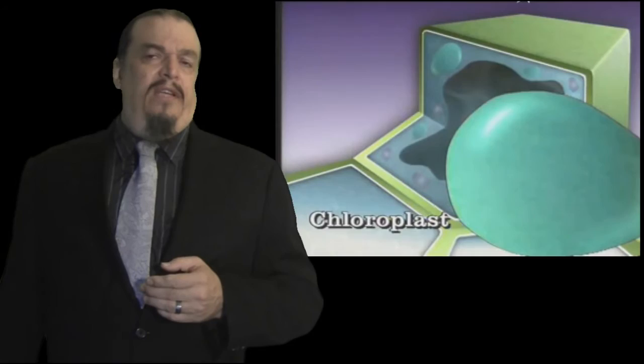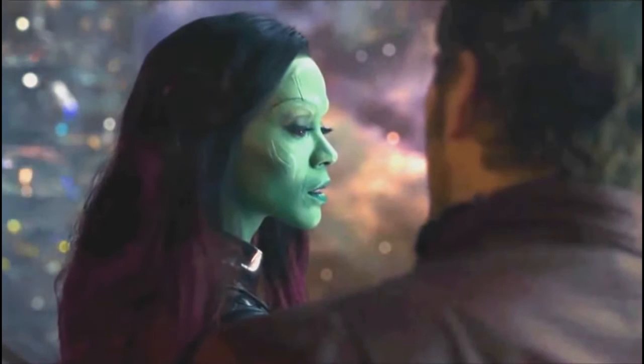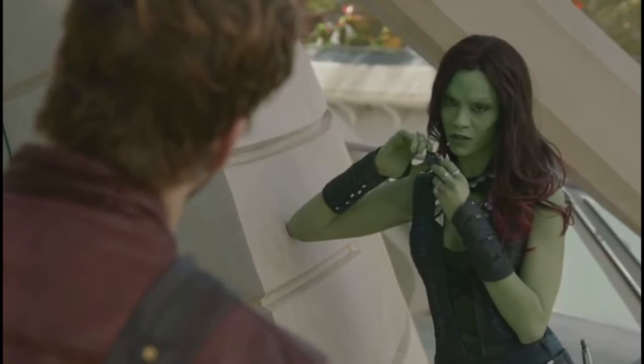The organelle that helps make food for the plant is called a chloroplast. Animals don't have chloroplasts in their cells. Can you imagine the world if they did? More animals would be green, and you would definitely need more sunlight or you would starve, but you wouldn't need to eat other organisms like plants, animals, and fungi at lunchtime.